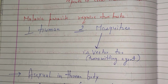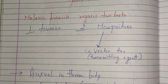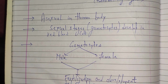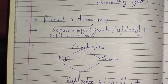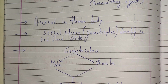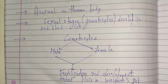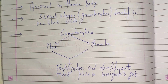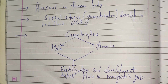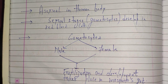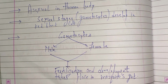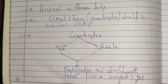The hosts of the malaria parasite are: first, human beings, and second, mosquitoes. The mosquito is also a vector as it is the transmitting agent. The asexual stage — sporozoites — occurs in the human body. The sexual stage involves gametocytes developing in RBCs; male and female gametes fuse through fertilization to form zygotes, which give rise to sporozoites. Gametocytes enter the mosquito's body, fertilization occurs in the mosquito's gut, and then they transfer to the salivary gland, from where the mosquito bites a human being to complete the cycle.